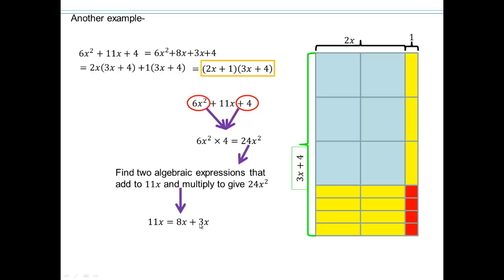And 8x times 3x gives me 24x². So we can rewrite this then as 6x² + 8x + 3x + 4. Between 6x² and 8x, I can factor out the greatest common factor, which is 2x. And I'm left with 3x + 4. 2x times 3x is 6x². 2x times 4 is 8x. 1 times 3x is 3x. 1 times 4 is 4.